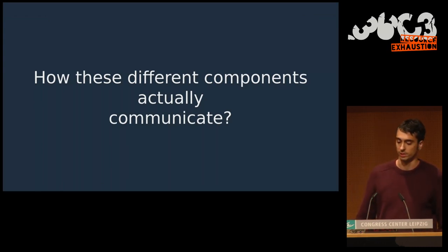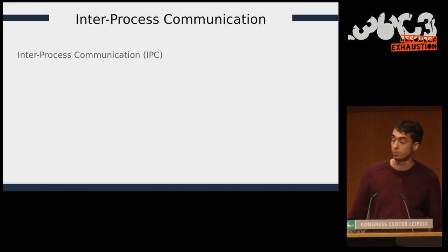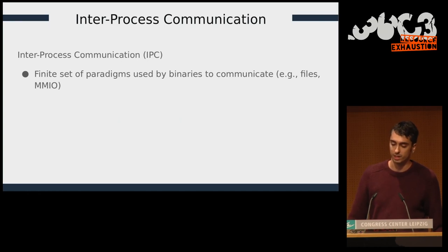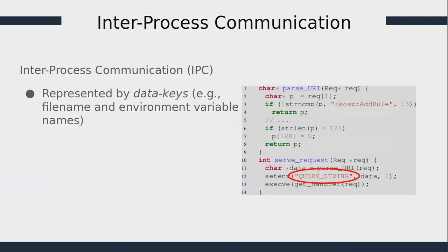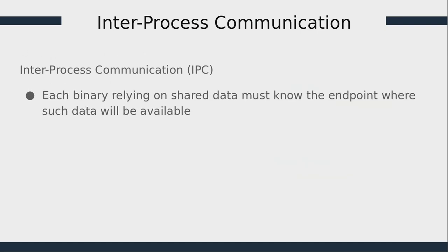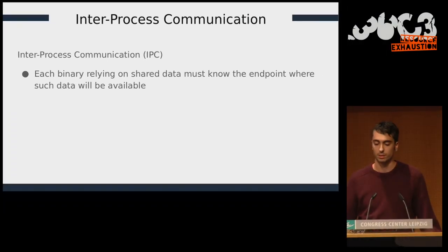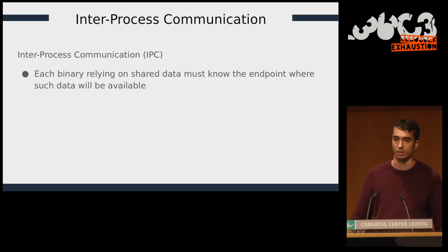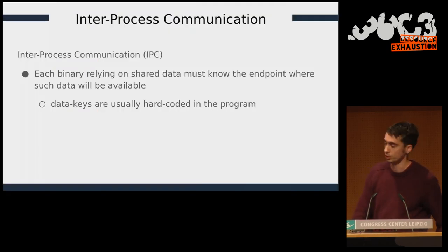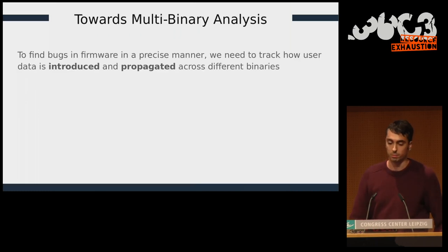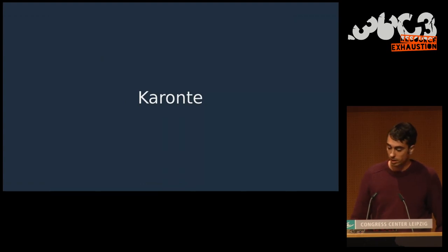How do different firmware components communicate? Through inter-process communication (IPC) — a finite set of paradigms such as files, environment variables, and MMIO. All IPCs are represented by data keys, such as file names or environment variable names like 'query string'. Each binary that relies on shared data must know the endpoint where such data is available. Data keys are typically hard-coded in the program itself. Therefore, to find bugs precisely, we need to track how user data is introduced and propagated across different binaries.